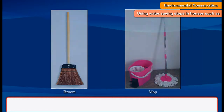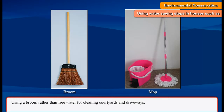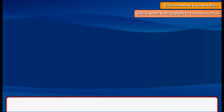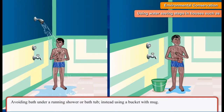Water-saving steps in houses include: using a broom rather than free-flowing water for cleaning courtyards and driveways, using harvesting of rainwater from rooftops, and avoiding bathing under a running shower or in a bathtub — instead using a bucket with a mug.